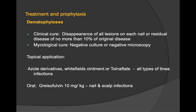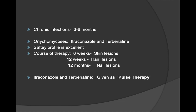Mycological cure is negative culture or negative microscopy. Topical azole derivatives, Whitfield's ointment, and tolnaftate are used in all types of fungal infection. Oral griseofulvin 10 mg/kg is given for skin, nail, and scalp infections; chronic infections require three to six months. For onychomycosis, itraconazole and terbinafine are used — safety profile is excellent; course of therapy is 6 weeks for skin, 12 weeks for hair, and 12 months for nail lesions, given as pulse therapy.